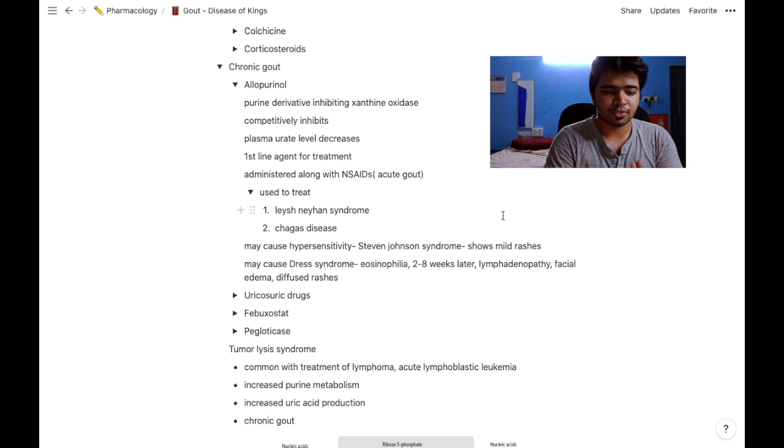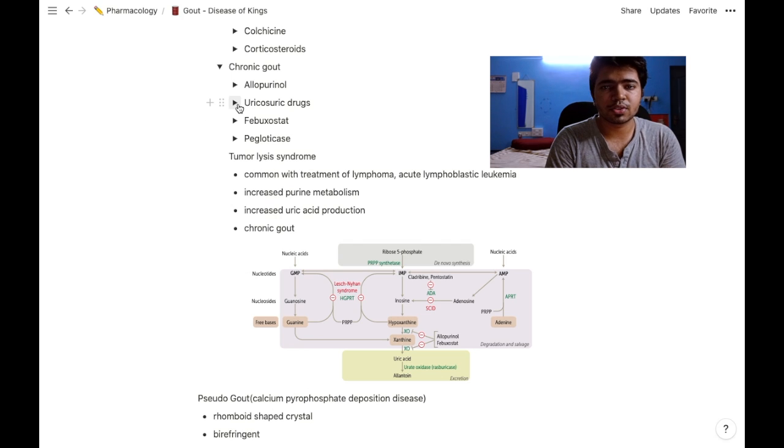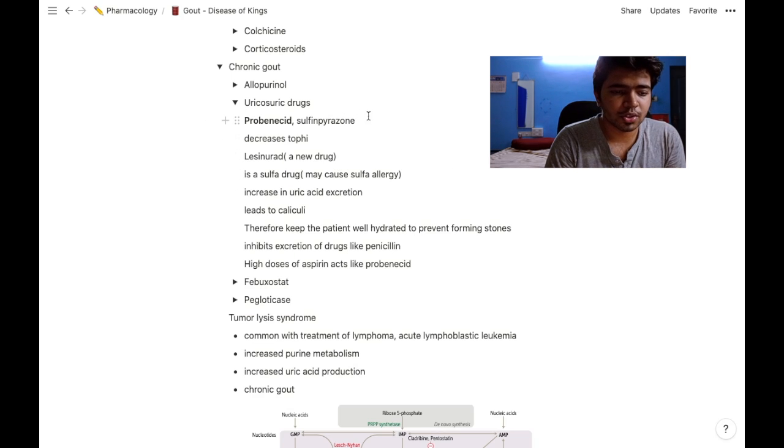DRESS syndrome is observed after two to eight weeks of administration and presents with lymphadenopathy, facial edema, and diffuse rashes. The main uricosuric drug used is probenecid, which decreases tophi. Lesinurad is a new drug.